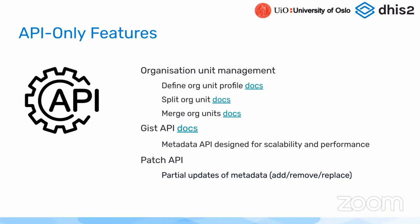First of all, we have the ability to define an organized profile — this is what Scott talked about in the beginning. Unfortunately, we didn't get time to include this in the user interface, though you can configure it in the API. You can use a tool such as Postman or any REST API client to configure it. It shouldn't be horribly complicated, and I think anyone with some basic API skills will be able to do this. You can use it starting from version 237 with a little bit of fiddling with the API.